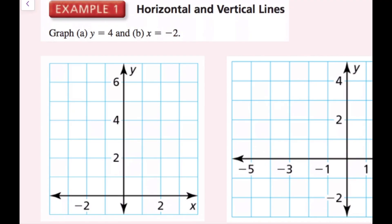We're going to graph y equals 4, and then graph x equals negative 2. To graph y equals 4, you could always make a table of values, but for horizontal and vertical lines you can just recognize that since y is equal to a constant, you'll have a horizontal line at y equals 4. All of my x values map to y equals 4, so I could draw as many points as I wanted to. I'll take my straight edge and draw a line through all of my points, then put arrows on your line to show that it is infinitely long.